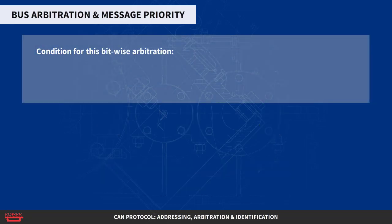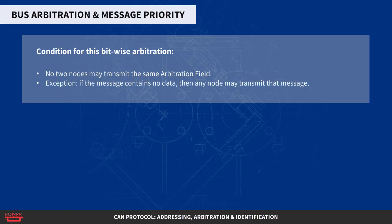An important condition for this bitwise arbitration to succeed is that no two nodes may transmit the same arbitration field. There is one exception to this rule: if the message contains no data, then any node may transmit that message.